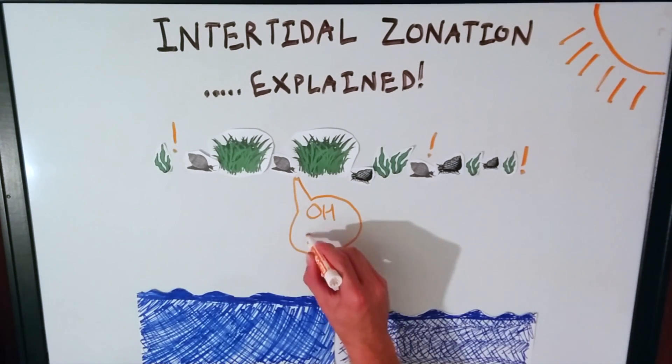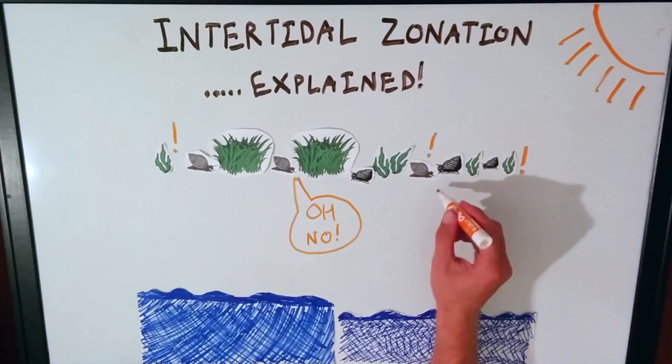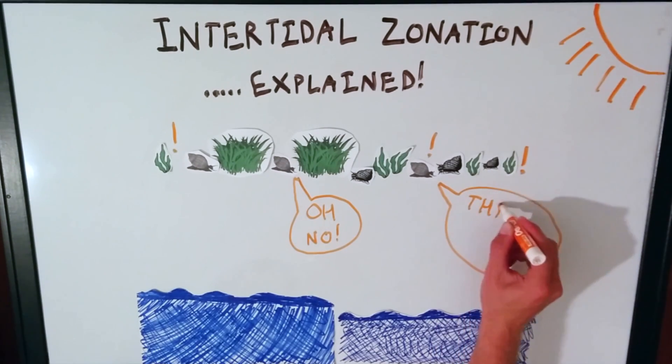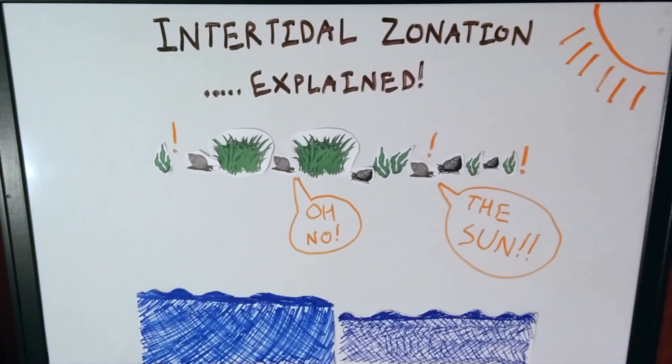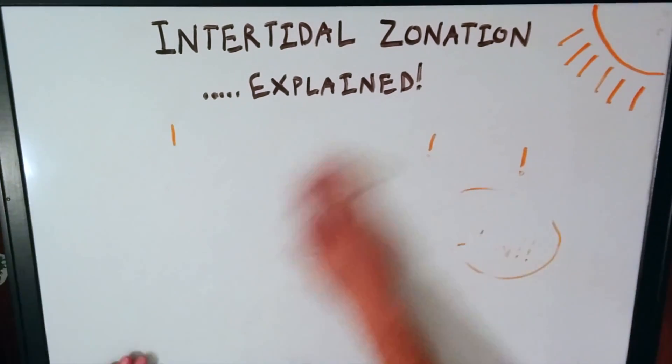As you may know, tide goes up and down in most places twice a day, leaving many marine animals and plants exposed to the hot sun at low tide for a few hours every tidal cycle. The tide creates horizontal bands of species on the coast which are based on how different kinds of stresses affect them.